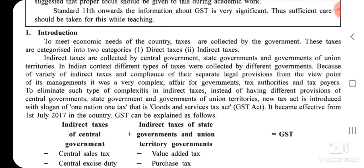In the Indian context, different types of taxes were collected by different governments. Because of the variety of indirect taxes and compliance with their separate legal provisions, it was a very complex affair for government, tax authorities, and taxpayers. To eliminate such complexities in indirect taxes, instead of having different provisions of central, state, and union territory governments, a new tax act was introduced with the slogan of One Nation, One Tax.